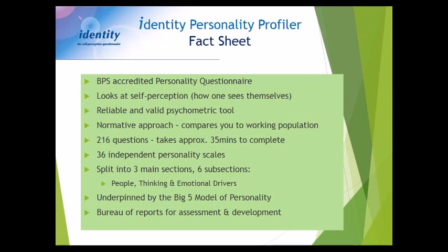We want people to be accurate in how they respond, and a substantial number of questions helps ensure that. You can get through it in about 35 minutes, as we encourage quick initial responses rather than overthinking. It's a work-based questionnaire, putting people in the mindset of how they are at work. It splits into three sections and six subsections: people, thinking, and emotional drivers — for instance, the people section looks at how we forward ourselves versus how we focus on others.